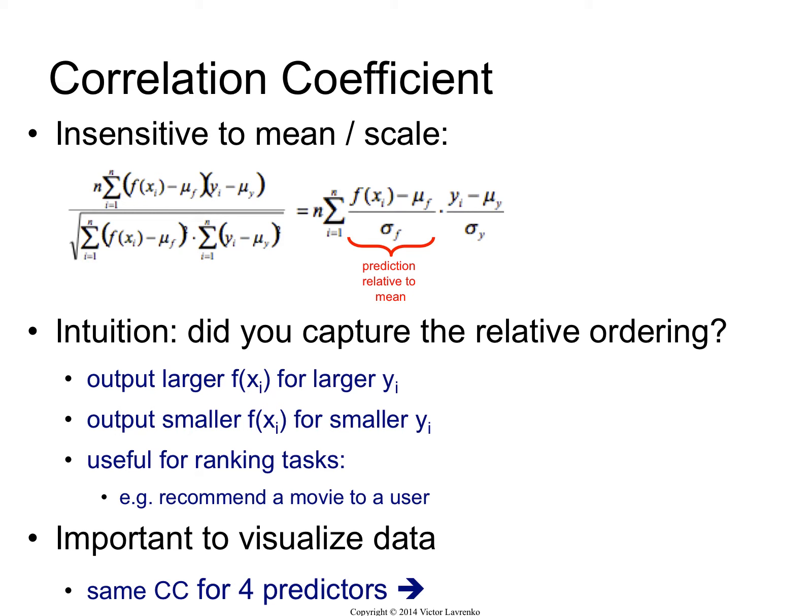What you'll see is you're doing a dot product of a strange mapping of the prediction. You take the predicted value, subtract the mean prediction to factor out the mean, and divide by the standard deviation.